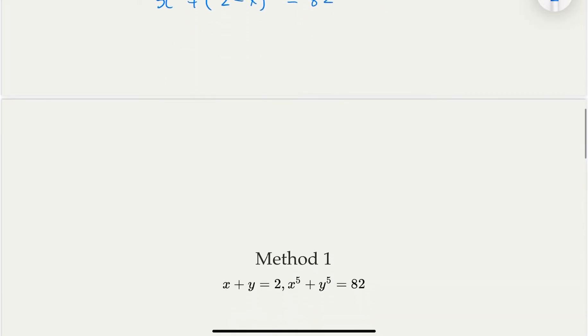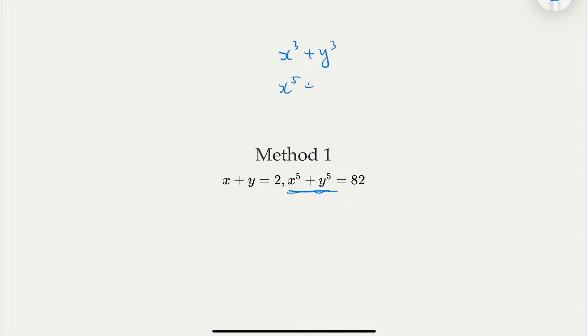So when you think about this problem, one other way is actually to use the factor of x to the fifth plus y to the fifth. So for the odd power, like x to the third plus y to the third, x to the fifth plus y to the fifth, we know that we can factor those.